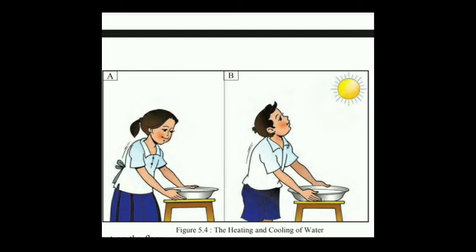In the afternoon, walk barefoot on the floor inside the house and feel the temperature of the floor. At around 3 o'clock, walk barefooted inside the house on the flooring and feel the temperature. Also feel the temperature of the water in the pot kept inside. Then do the same activity outside — walk barefooted outside and feel the temperature of the water in the pot kept outside in the sun. Write down your observations about the temperatures of land and water.